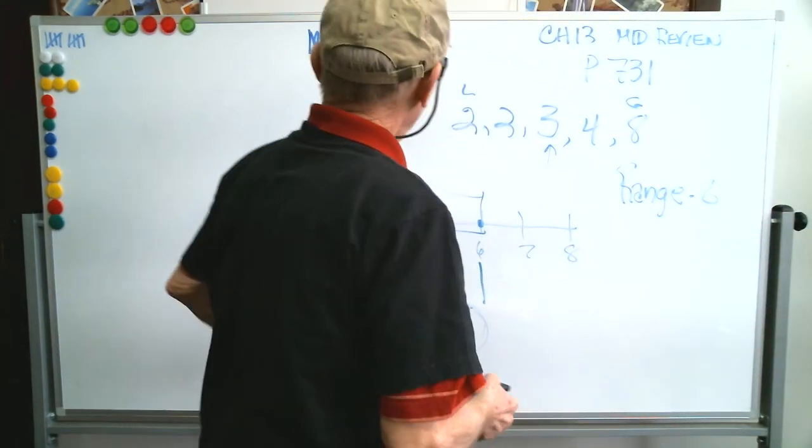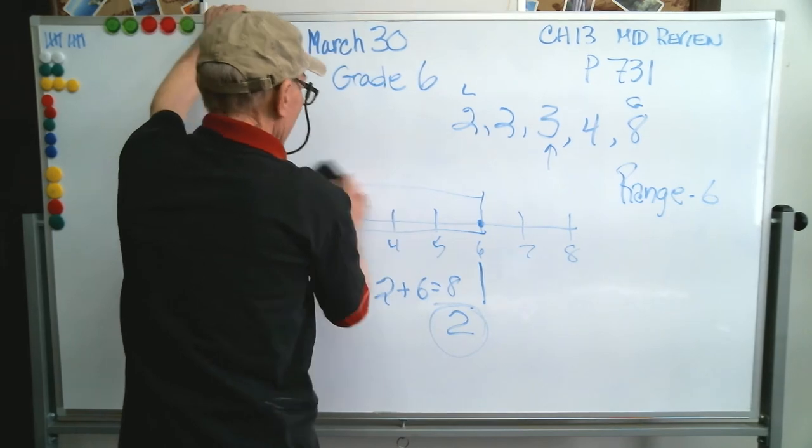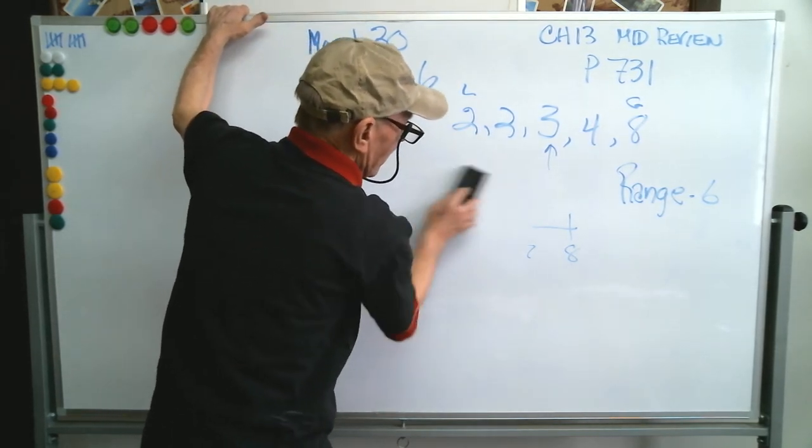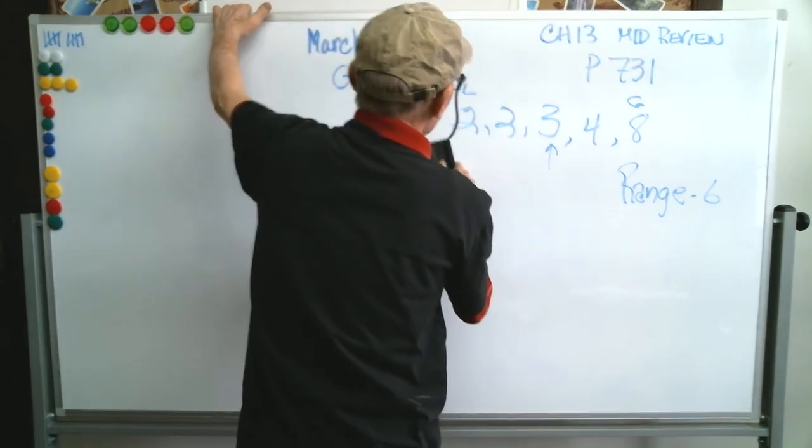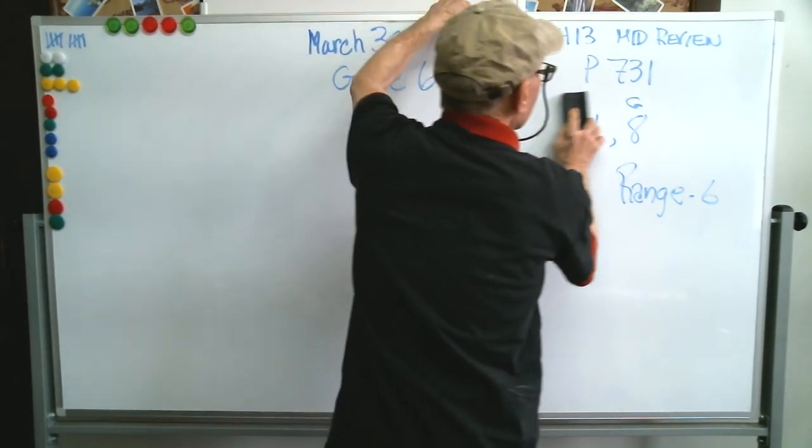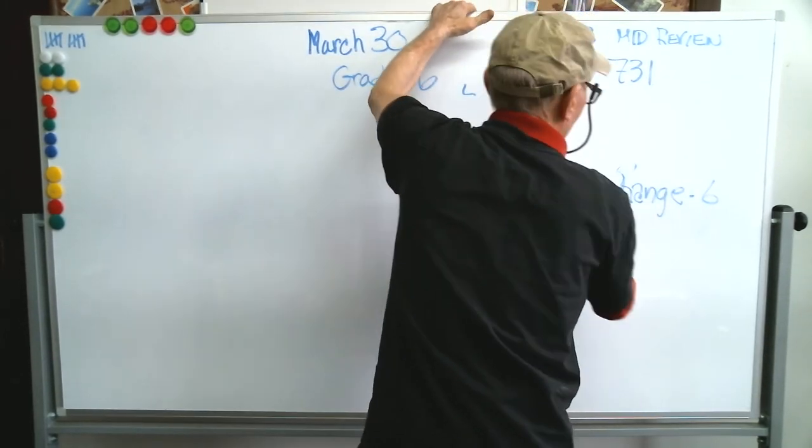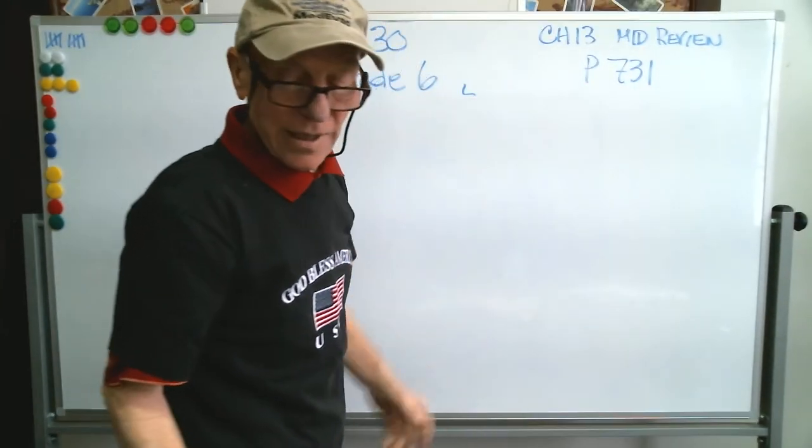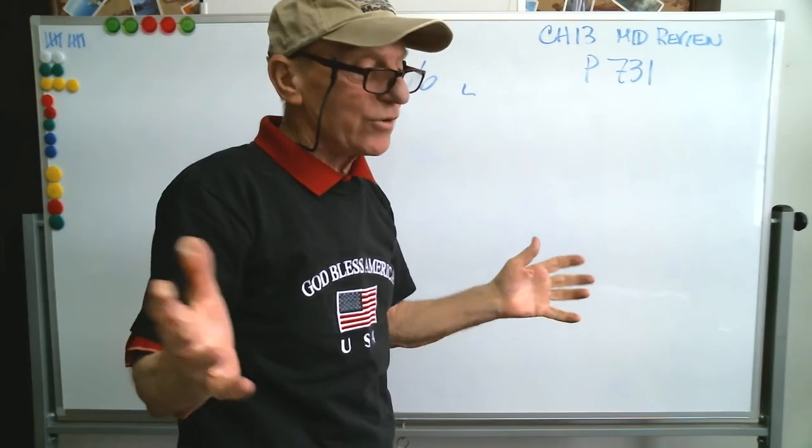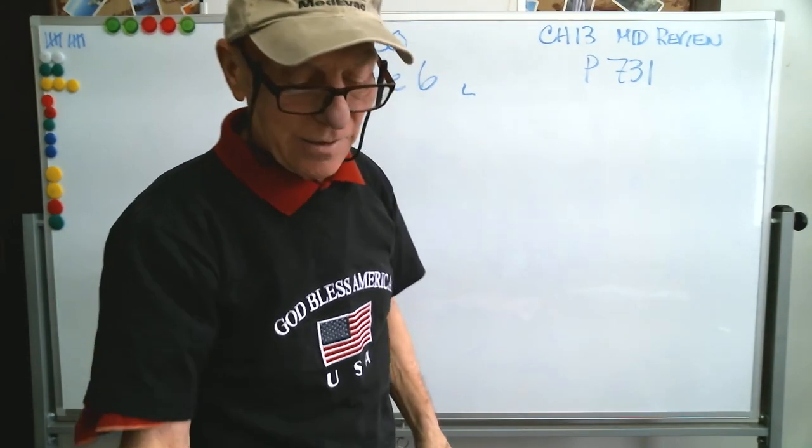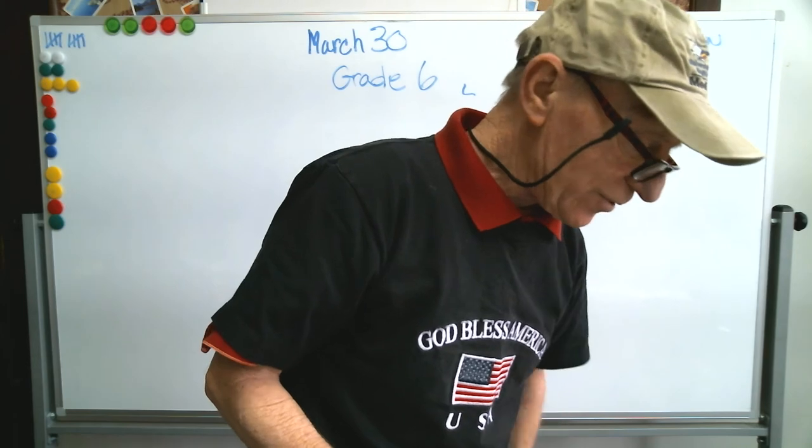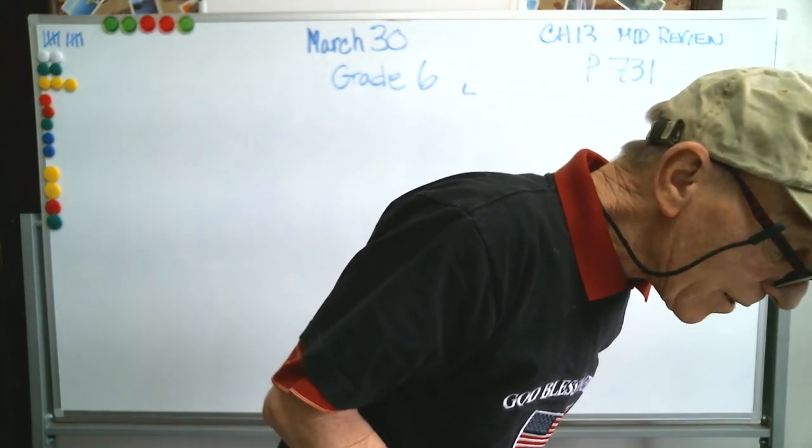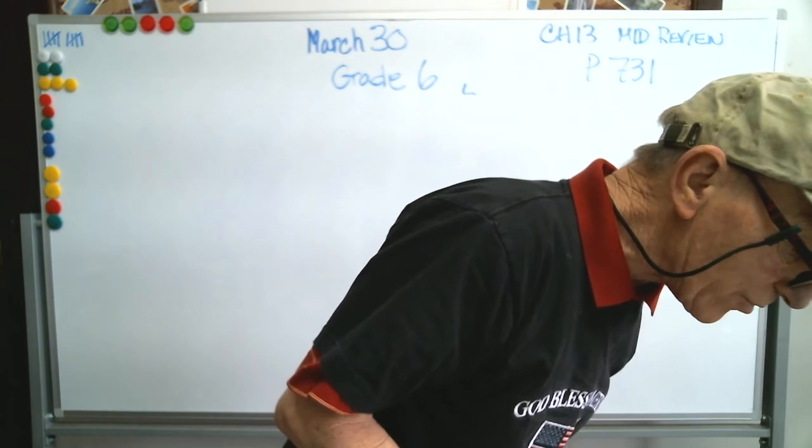You got to keep trying to remember the steps. When we're doing interquartile range we're looking at medians. When we're doing absolute mean deviation we're looking at mean. Mean and median are two different things. Get really solid on the difference.